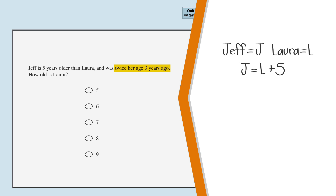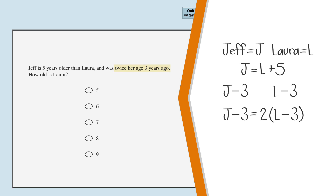Now we're told that Jeff was twice Laura's age three years ago. Jeff's age three years ago was j minus three. Similarly, Laura's age three years ago was l minus three. Since Jeff's age was twice Laura's age at the time, j minus three equals two times the quantity l minus three. Let's simplify this equation by multiplying each item in the parentheses by two, so j minus three equals two l minus six. At the end of the question stem, we are asked for Laura's age, so we need to solve for l.